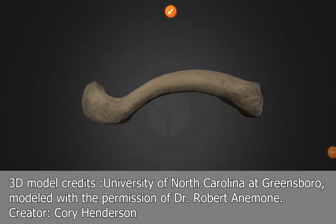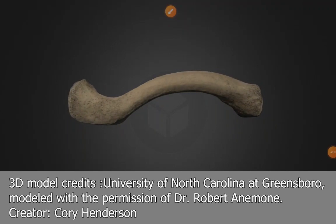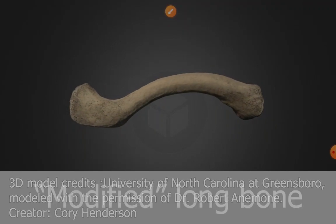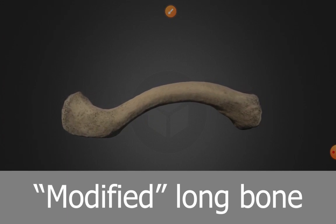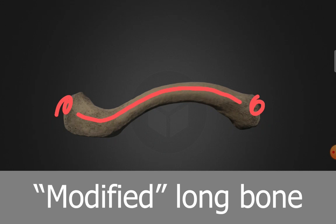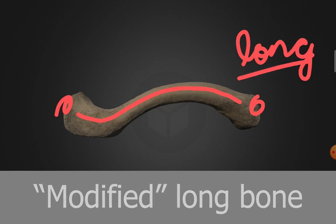Let us look at the peculiarities of the clavicle. The clavicle is a modified long bone because it has two ends and a sinuous shaft. The presence of two ends and a shaft makes it a long bone — the definition of a long bone is that it has two ends and a shaft.